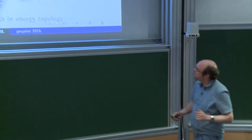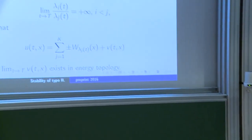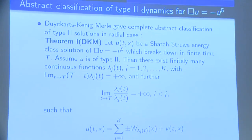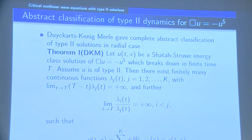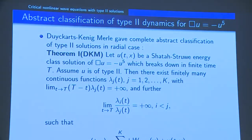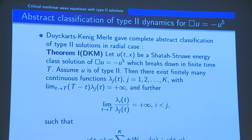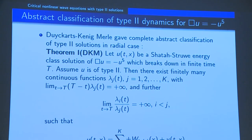Here is the statement of DKM in its strongest form, which I think is an absolutely fantastic theorem. It says that if you have a type 2 solution which breaks down in finite time, then you can pick scales λ_j(t), which we can arrange in decreasing order such that the quotients approach infinity, and these parameters blow up strictly faster than the self-similar rate 1/(T-t), where T is the blow-up time.